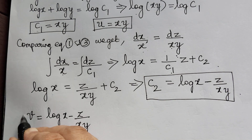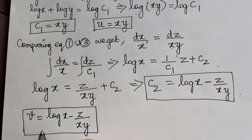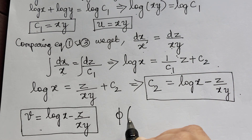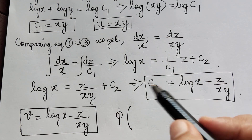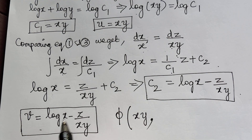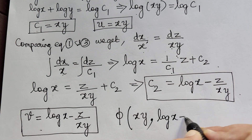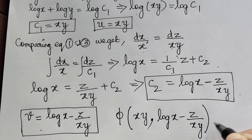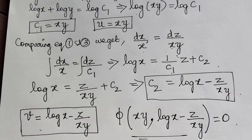We have obtained solution u and solution v. Therefore the general solution phi of (u, v) equals 0, where u is xy and v is log x minus z by xy — so phi of (xy, log x minus z by xy) equals 0. This is the final solution.